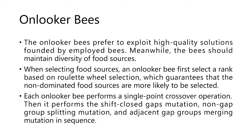For the onlooker bees: the onlooker bees prefer to exploit high-quality solutions found by employed bees, while maintaining diversity of food sources. When selecting food sources, an onlooker bee first selects a rank based on roulette wheel selection, which guarantees that non-dominated food sources are more likely to be selected. Each onlooker bee performs a single-point crossover operation, then the shift-close-gaps mutation, non-gap group sleeping mutation, and adjacent-gap group merging mutation in sequence.